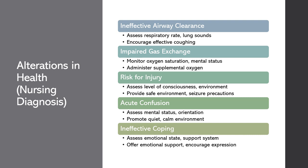First, let's discuss ineffective airway clearance. Clinical manifestations might include coughing, wheezing, and increased respiratory secretions. We would assess the patient's respiratory rate, lung sounds, and secretions. To help our patients, we might encourage them to cough effectively, use incentive spirometry, or administer bronchodilators if prescribed. The rationale is to clear airway secretions and improve airflow. We would educate patients and families on the importance of maintaining a clear airway and techniques for effective coughing.